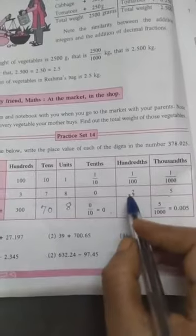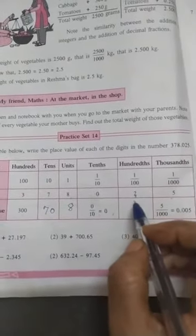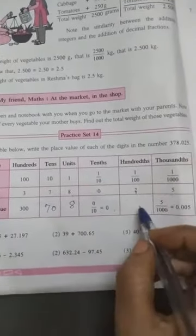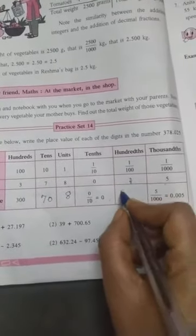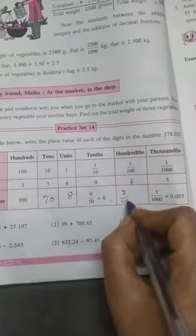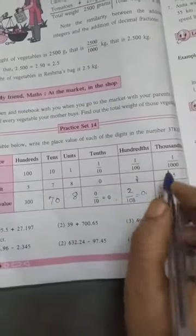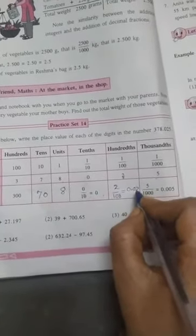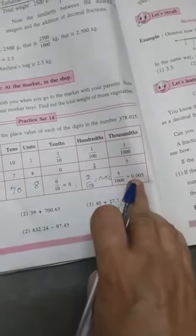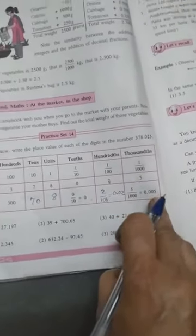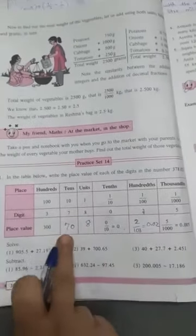Here, hundredth place, 2 is there. Then it is 2 upon 100, means 0.02. And last, 5 upon 1000 means is equal to 0.005. Like this, we are solving first question. See.